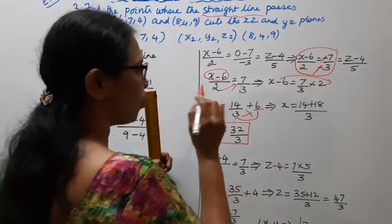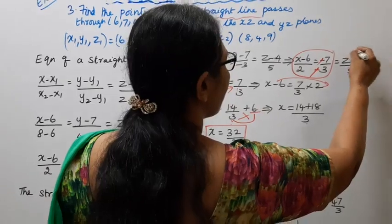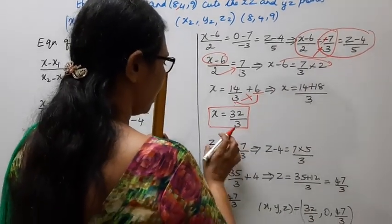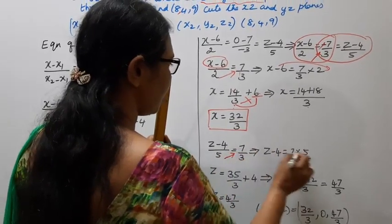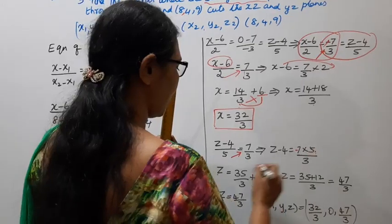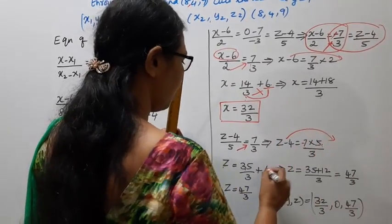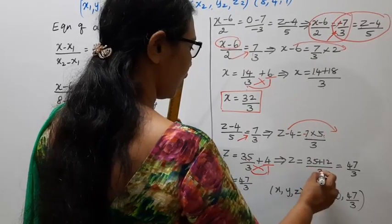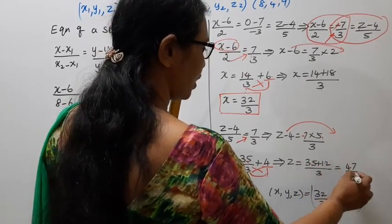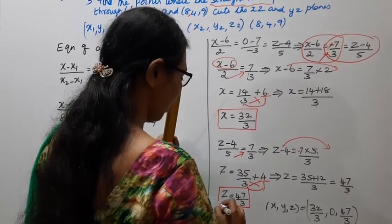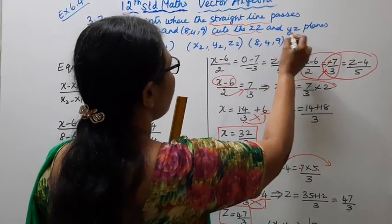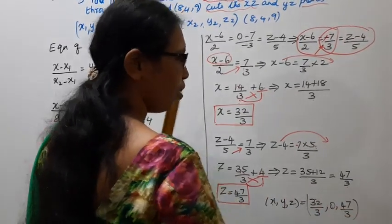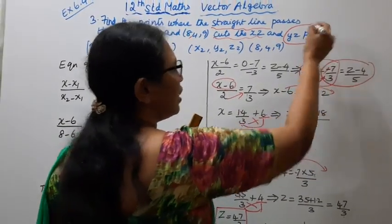Now putting y equal to 0, solve for z: z minus 4 by 5 equals 7 by 3. Cross multiply: z minus 4 equals 35 by 3, so z equals 35 by 3 plus 4, which is 35 by 3 plus 12 by 3, giving z equal to 47 by 3. The line cuts the XZ plane at x = 32/3, y = 0, z = 47/3.